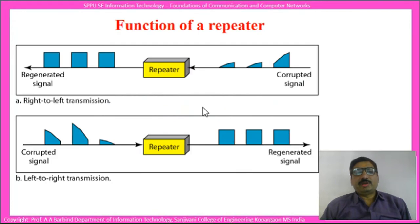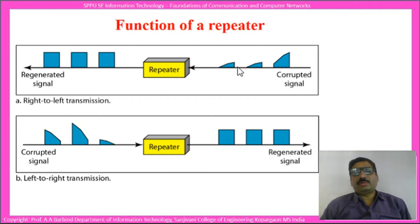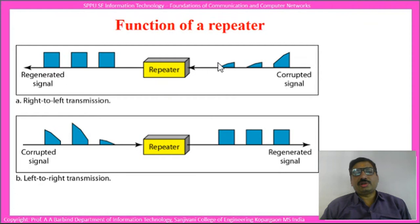This diagram shows how the repeater works. When a signal travels on a LAN segment, it may decay. As it reaches the repeater, the repeater regenerates that signal. Even though the signal is corrupted, it is possible to recognize whether it represents a zero or a one, and the repeater strengthens it. This works in both directions: right-to-left and left-to-right transmission.